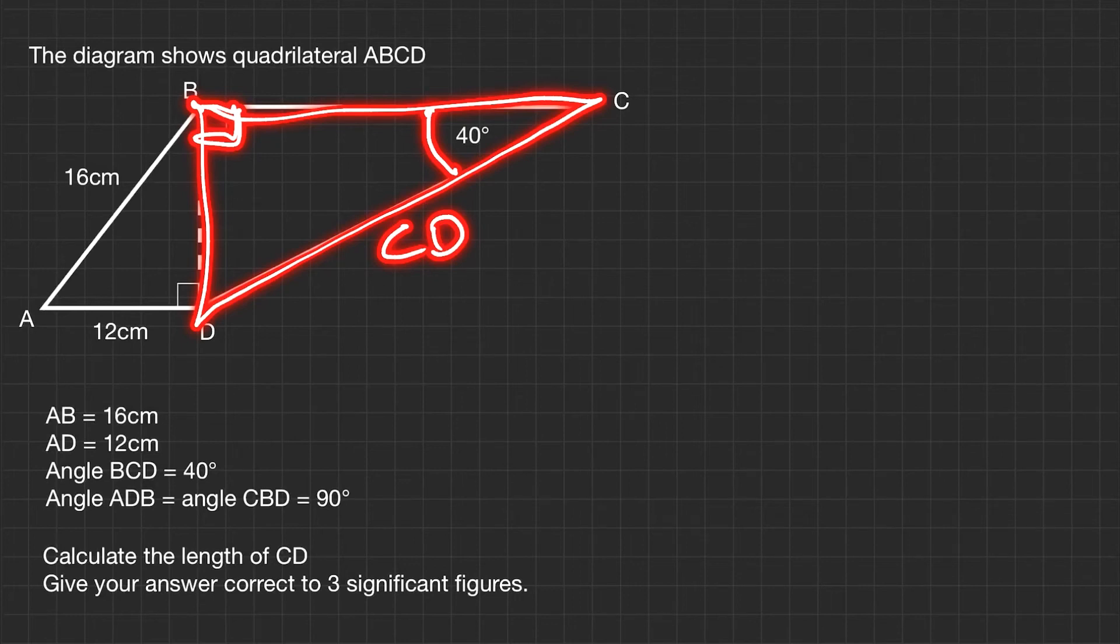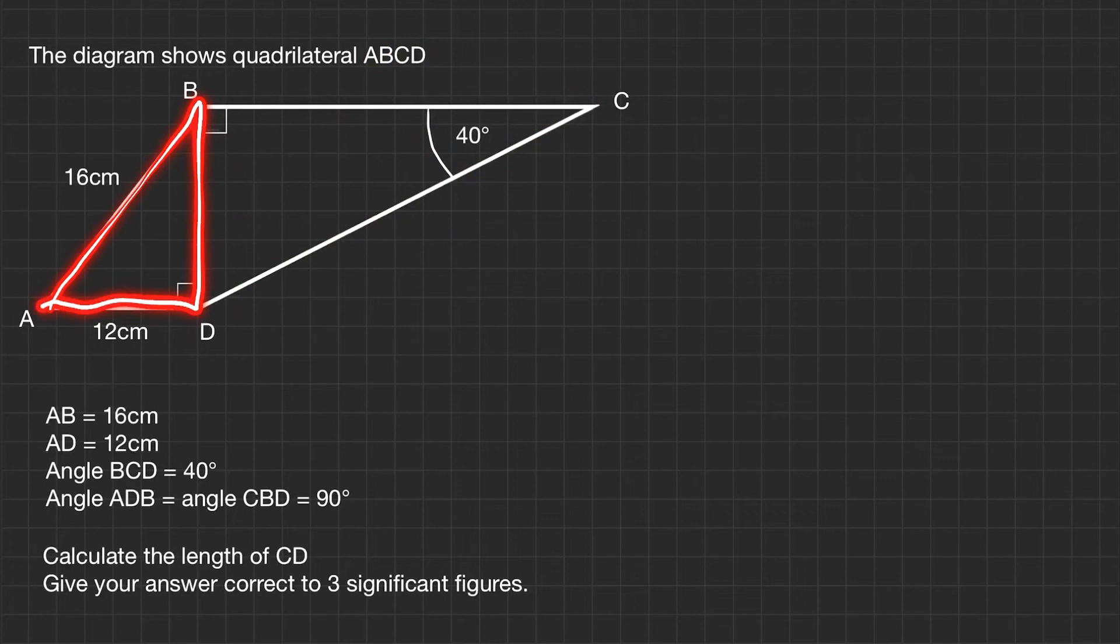We need at least one bit of information, or one side, to be able to work this out. We can't find anything from this side, but we should be able to find something for this side, because we have another triangle right here. Another right-angled triangle, which is quite handy for us. You might be able to tell it's going to be a two-step problem. So let's have a look at this triangle ABD. I'm going to just draw it at the side with the right angle, 16 centimeters, and 12 centimeters.